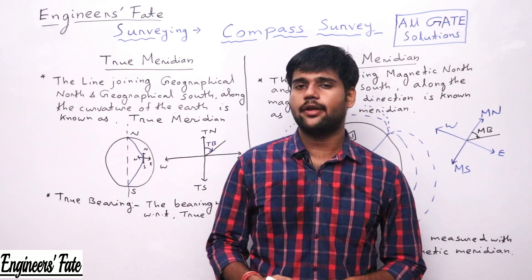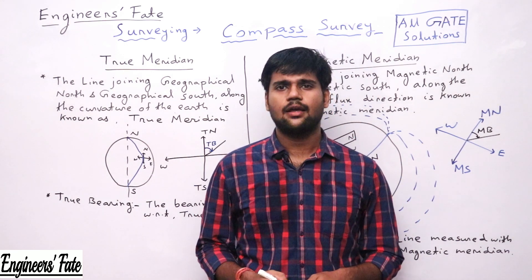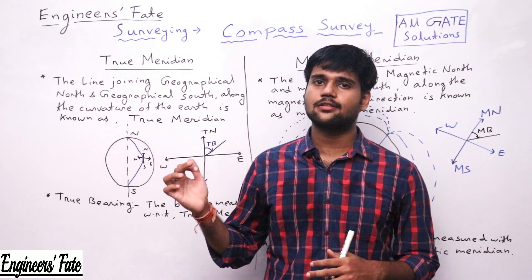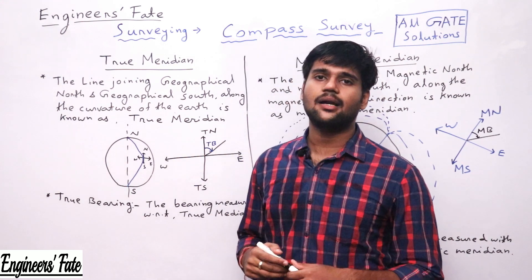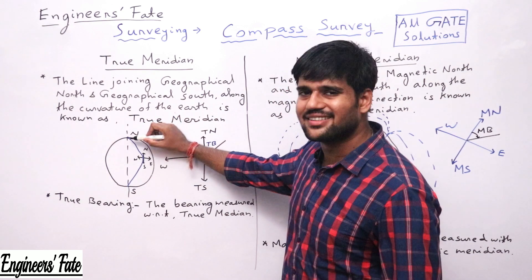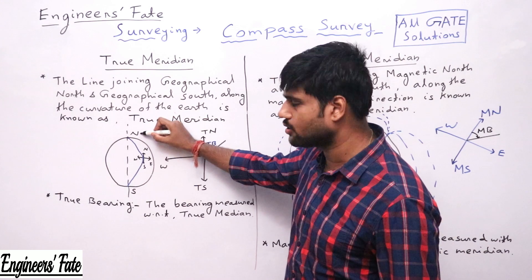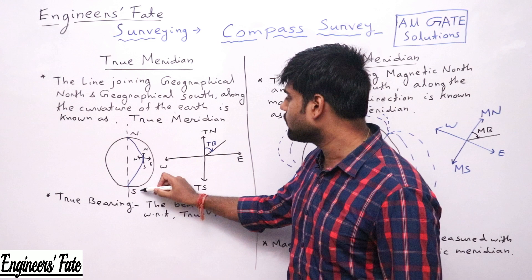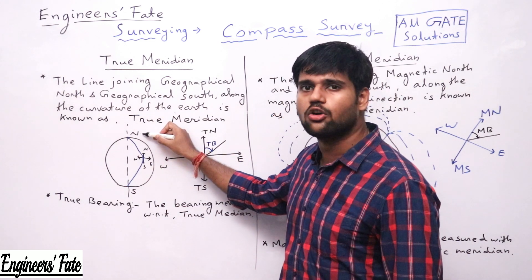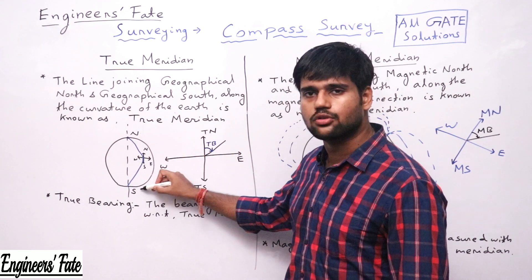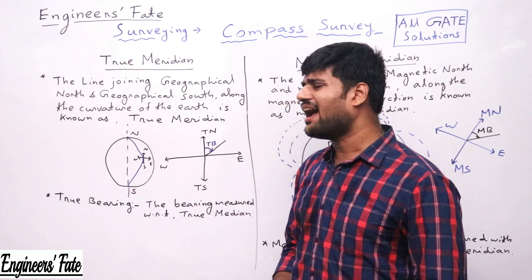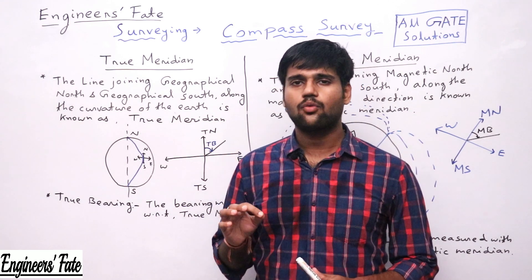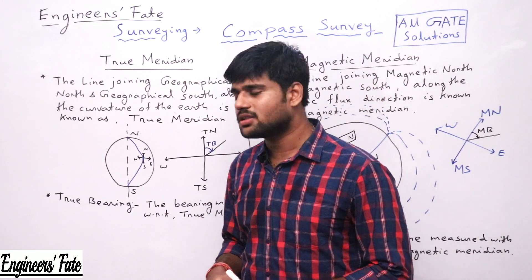Now we'll discuss true meridian. There is the brightest star above the earth's surface — in Hindi it is called Dhruva Tara. Astronomical surveyors take a projection from that brightest star to the earth's surface. This projection bisects the earth at a point denoted as north, then continues to bisect the earth at another point denoted as south. This north is known as the north pole or geographical north, also called true north. This south is called the south pole or geographical south, true south. They don't change with place and time.